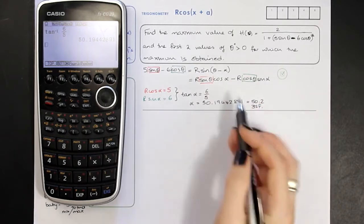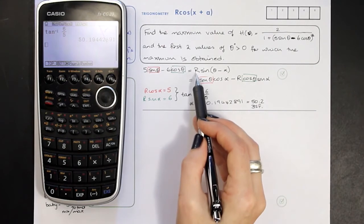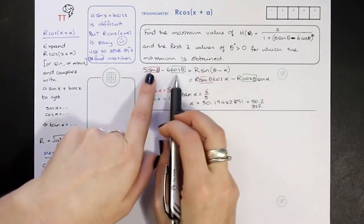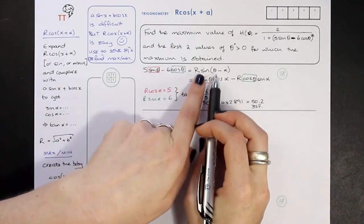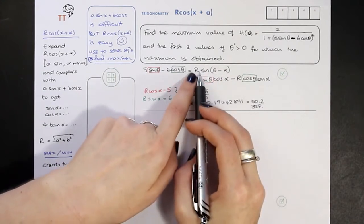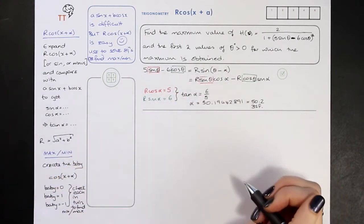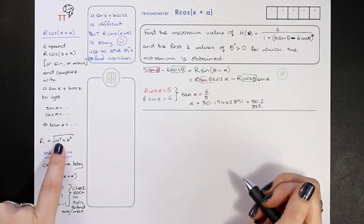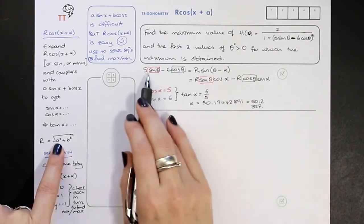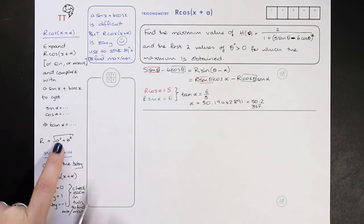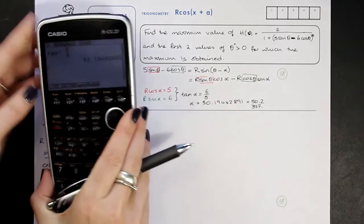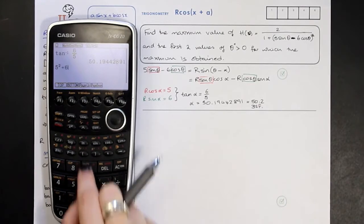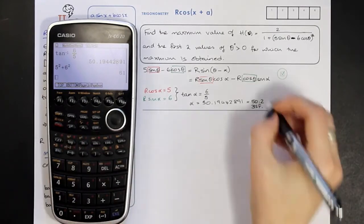So we've got alpha, and once we've got R then we're done — well, we're not done with the question, but we're trying to smash these two together to make one term, and the only bits missing are R and alpha, and I've just found alpha. R is super easy: all you have to do is Pythagoras on those two numbers, the 5 and the 6. So we literally do √(5² + 6²) = √61. It's almost always needs to be exact.